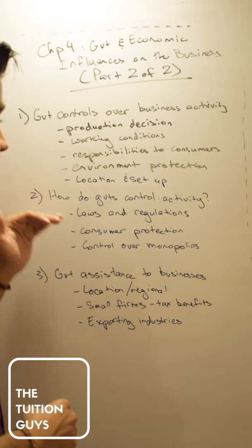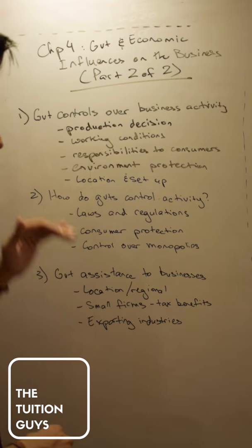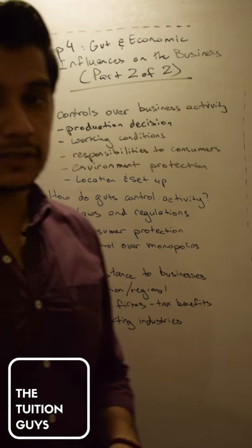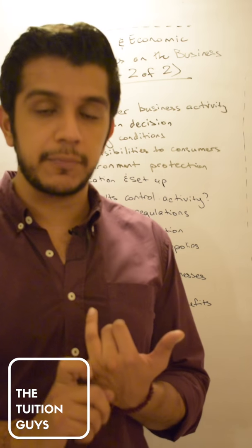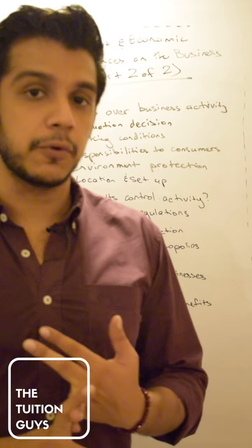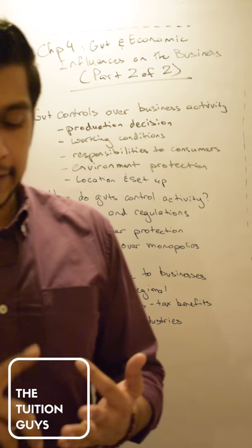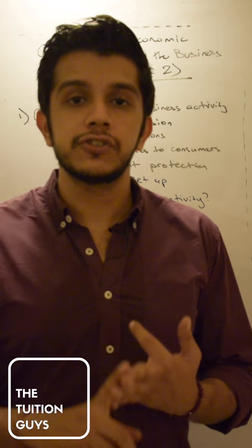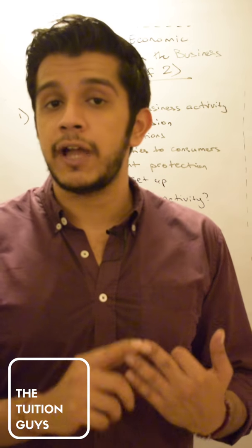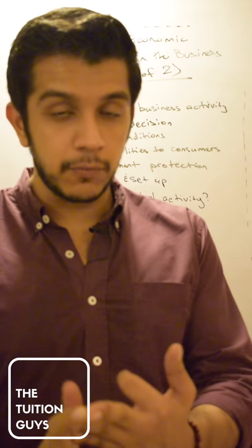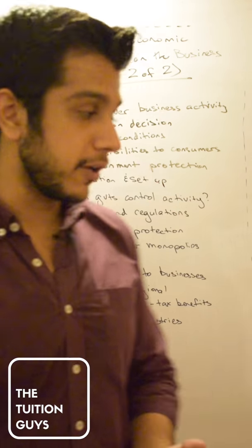But how does the government control the activity? The first way they do this is by laws and regulations. So governments pass bills and laws that either protect the employee, also provide equal opportunities for both men and women in the work and then also provide laws to protect consumers as a whole as to what extent do consumers have a right over demanding what they want and what price they want that product at.